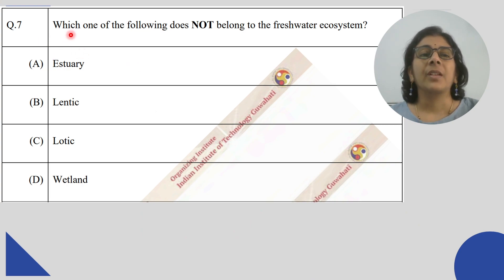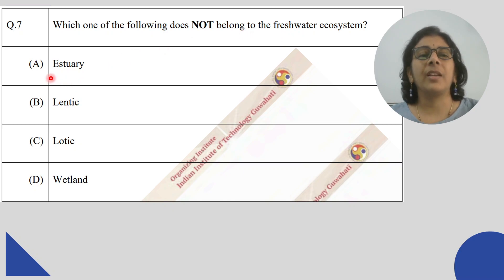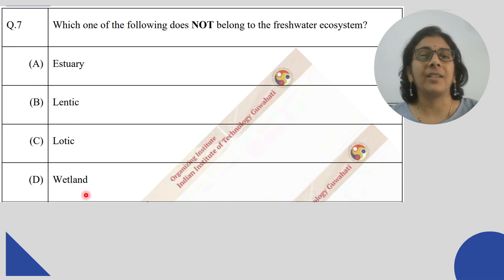Which one of the following does not belong to the fresh water ecosystem? The options are: Estuary, Lentic, Lotic, or Wetland. If we know these four things, which are ecosystems, then we will get the answer.